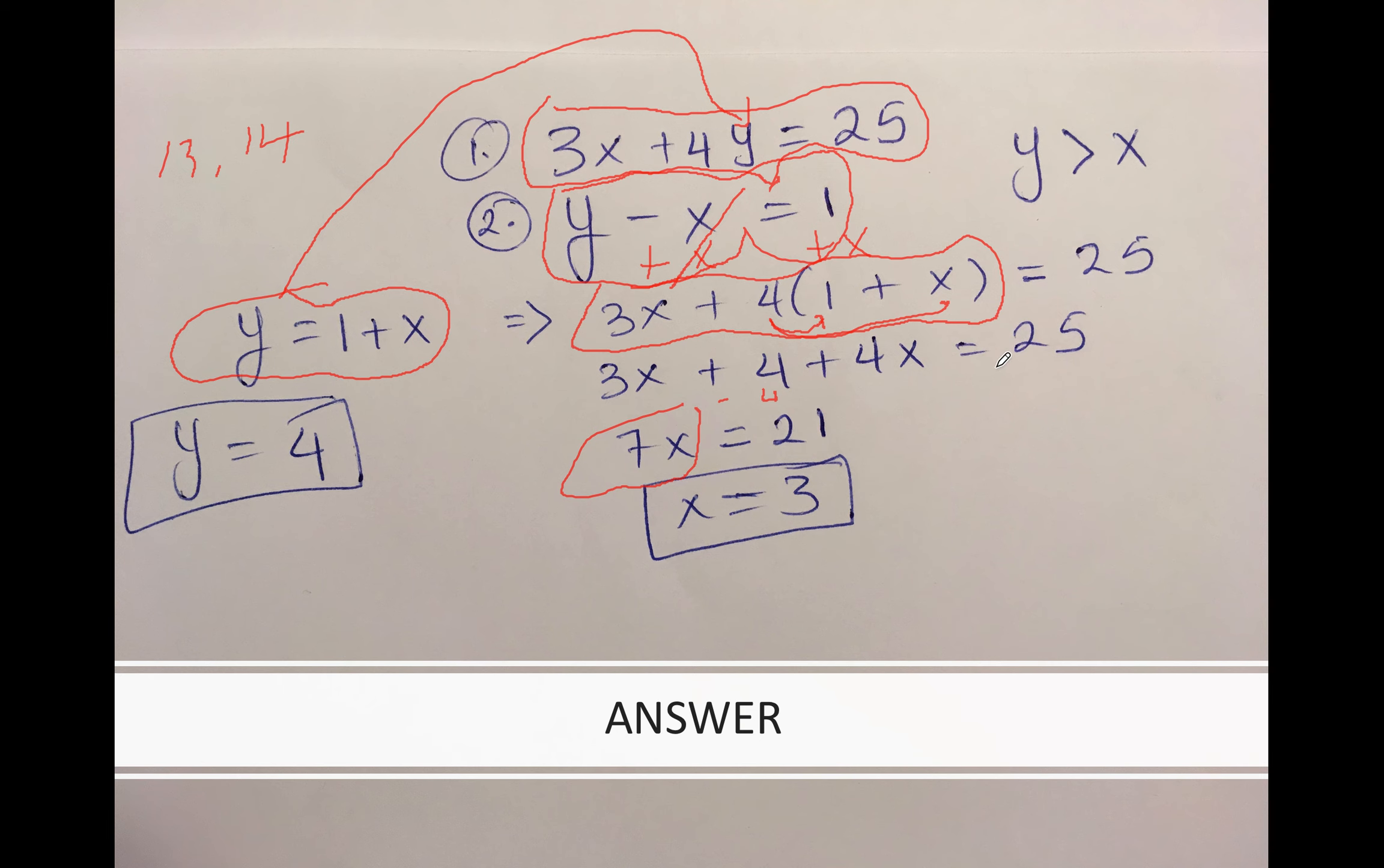Then I move the 4 to the right: 25 - 4 equals 21. This cancels out. Divide 7 on both sides to get x by itself.